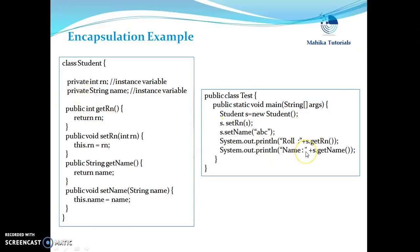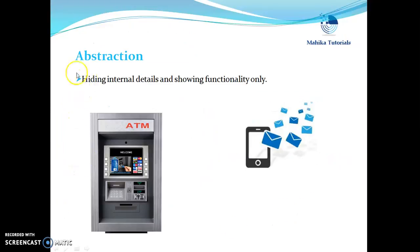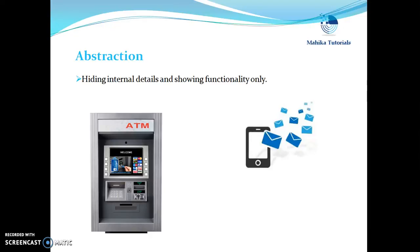Now let us see what is abstraction. Abstraction basically means hiding internal details and showing only the functionality. Let's take an example of an ATM machine. When we use an ATM machine, we just follow the instructions given by the GUI. We do not know the technology working at the back end — we do not know what database is being used, what language was used to develop the application, and so on. We simply use the ATM by following the instructions.